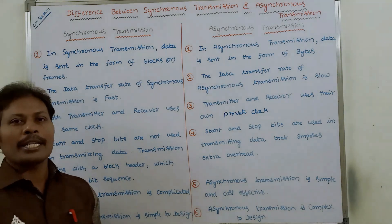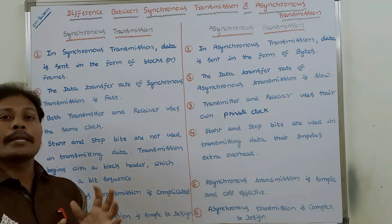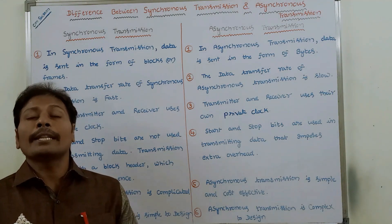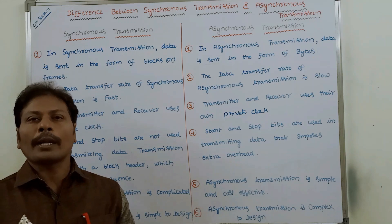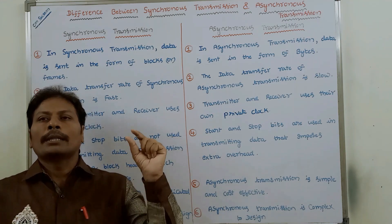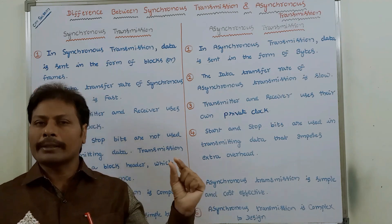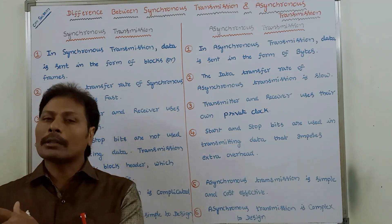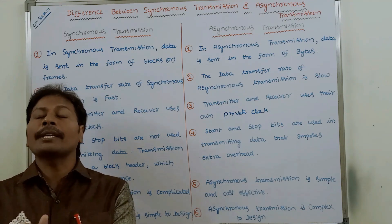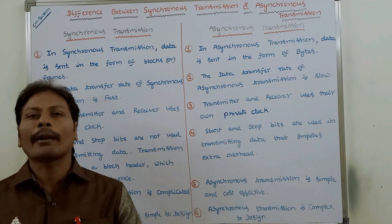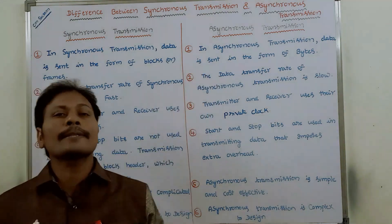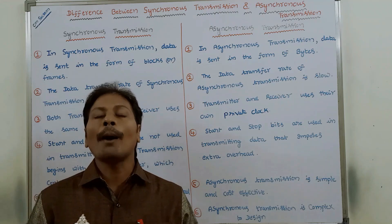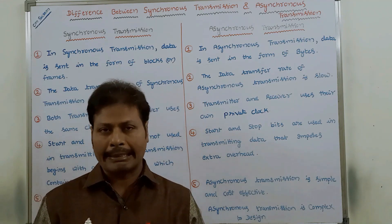The first point: in the case of synchronous transmission, the data can be transferred in the form of blocks or frames. Suppose a transmitter and receiver are there; the data is sent from the transmitter to the receiver in the form of blocks or frames. Whereas in the case of asynchronous transmission, data can be transferred in the form of bytes or characters.